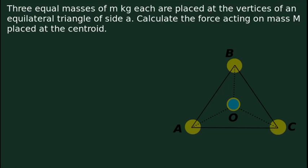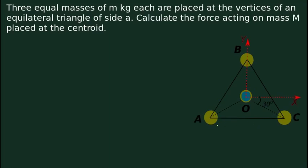To understand the centroid: if we join a vertex to the midpoint of the opposite side, we get a straight line called a median. Drawing three medians, they meet at a point called the centroid. For an equilateral triangle, all medians have the same length, and the distance from centroid to each vertex is also the same. Three equal masses of small m kg are placed at the vertices and capital M kg is at the centroid.